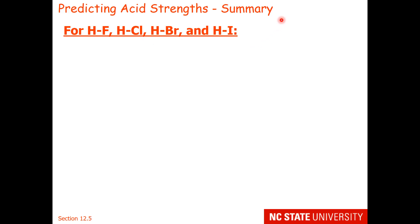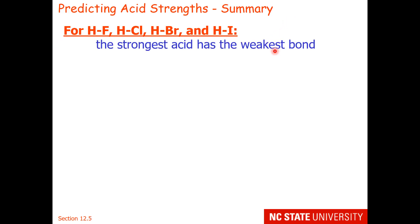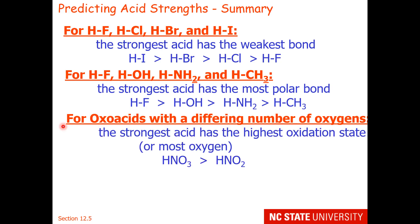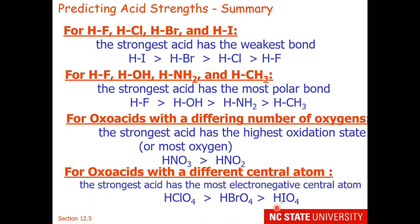Here is your summary. For a primary effect going down a group, the strongest acid has the weakest bond and is therefore furthest down the group. For a primary effect going across a period, the strongest acid has the most polar bond and therefore the greatest electronegativity difference from hydrogen. For secondary effects, the strongest acid has more oxygens and a more electronegative central atom. In the next lecture, we will look at base strengths.